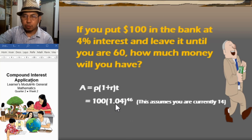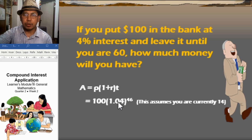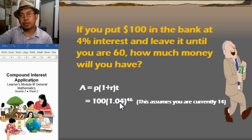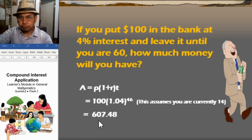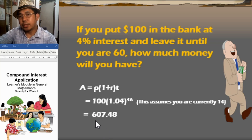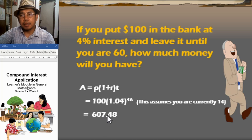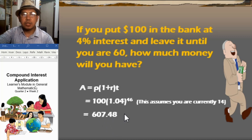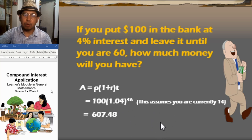Raise 1.04 to the 46th power, then multiply by 100. The final amount is $607.48. That is how much money you will have when you reach age 60 — convert that to pesos and it's quite a significant amount. These are practical applications of compound interest.